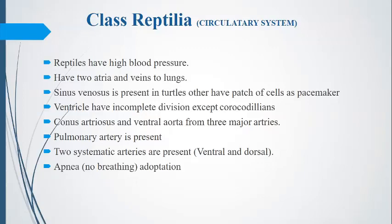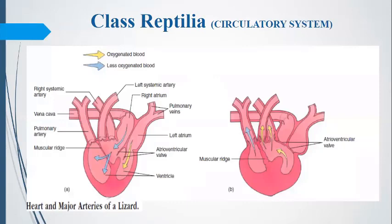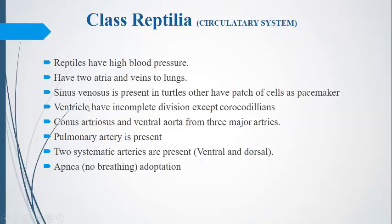In the circulatory system, reptiles have two atria — the right atrium and the left atrium — and one ventricle that is partially divided, not completely. There is also a conus arteriosus. Sinus venosus is present and acts as a pacemaker in turtles, but in other animals, pacemaker cells work in place of sinus venosus.